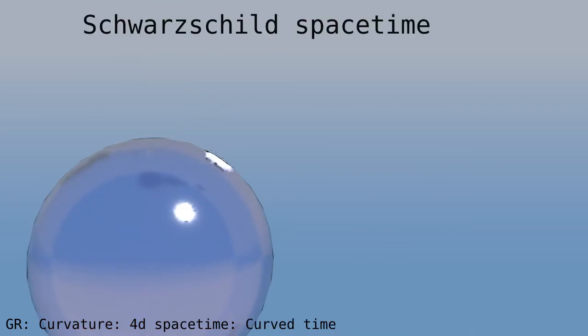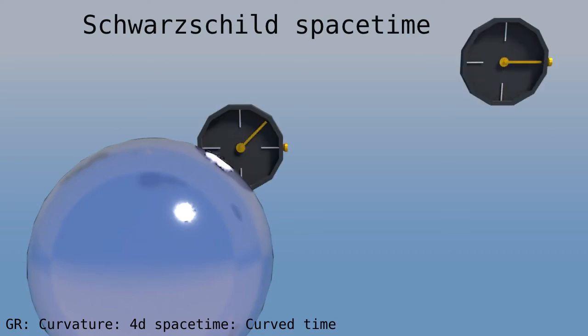Now let's go back to the Schwarzschild spacetime, where not only space curves, but time also curves. What does it mean for time to curve? Well, out in space, far from the mass, clocks tick at a certain rate. But near a mass, clocks run in slow motion.